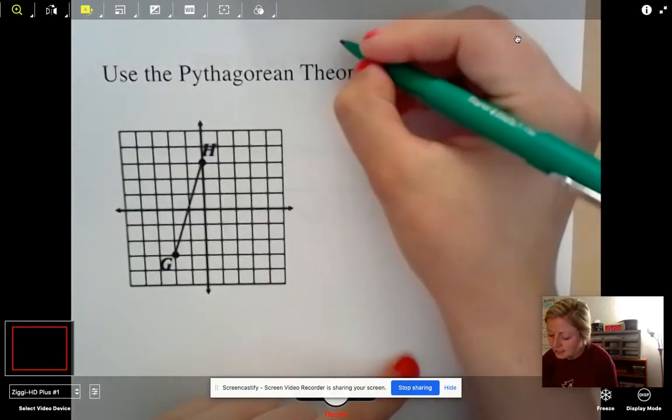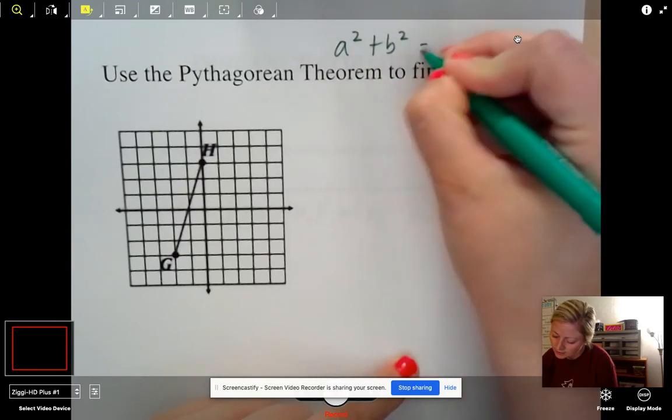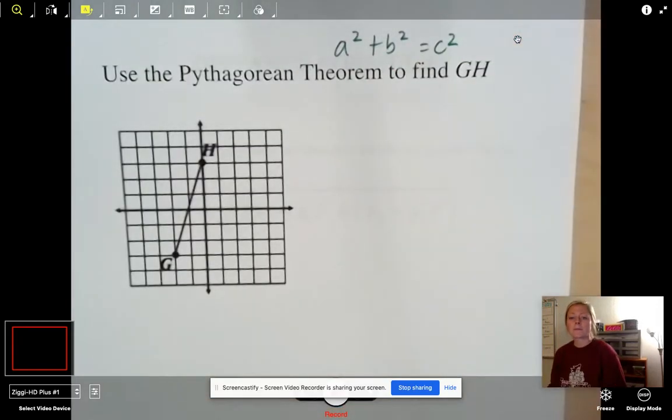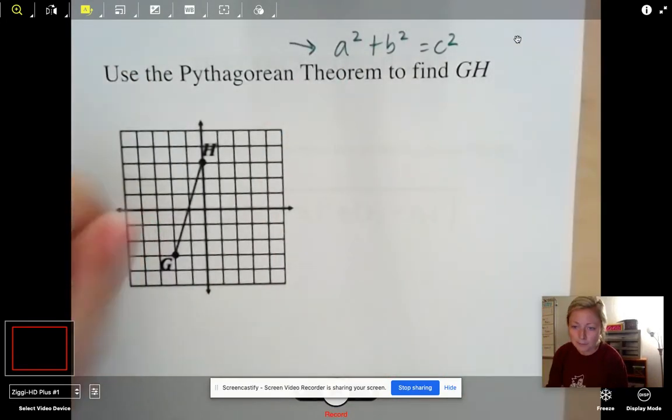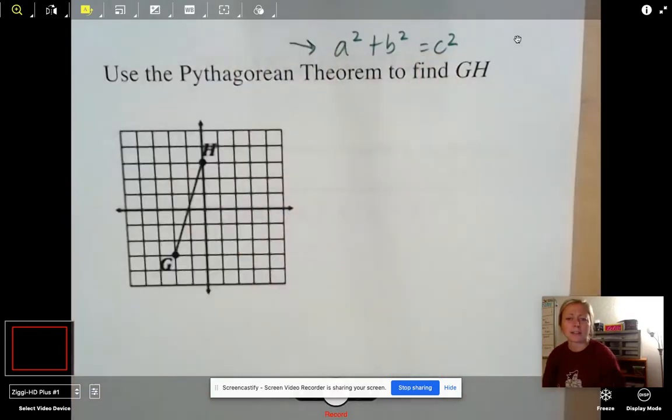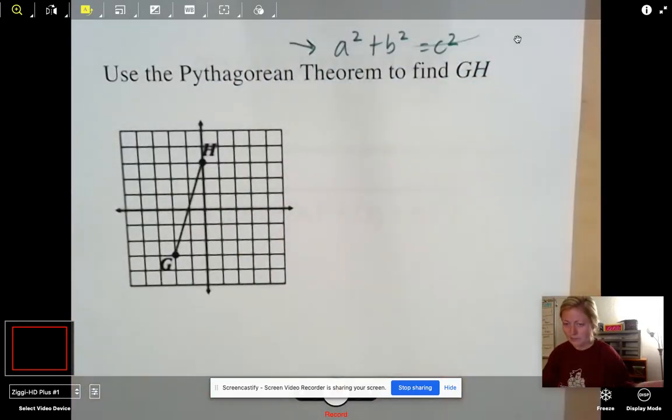But you can use the Pythagorean theorem sometimes to find the length of a segment if it's in an XY plane. So if you're kind of like, what is she talking about? What's the Pythagorean theorem? No worries. This is the notorious A squared plus B squared equals C squared. I feel like any adult you ask, what's something you remember from geometry? This is like the one thing that they can remember is A squared plus B squared equals C squared. They probably can't tell you what they use it for. They probably can't tell you what those letters mean. But I feel like everyone just kind of remembers this as an adult.